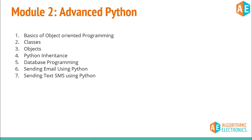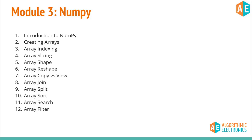Module 2 is Advanced Python Programming, covering object-oriented programming — classes, objects, Python inheritance — as well as database integration with Python, specifically SQL databases. We will also discuss sending emails and SMS through Python using API services.